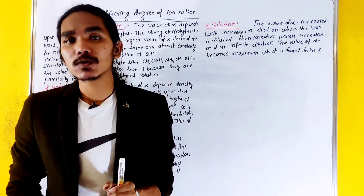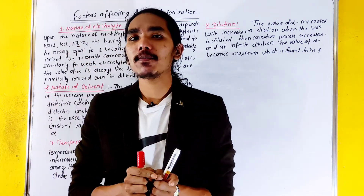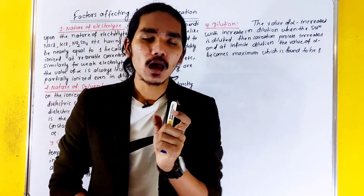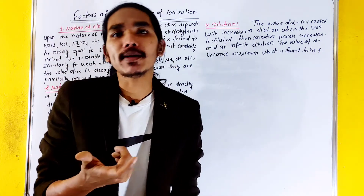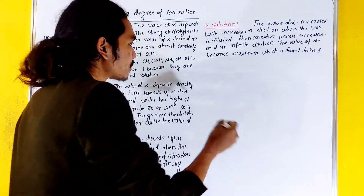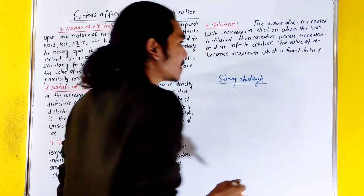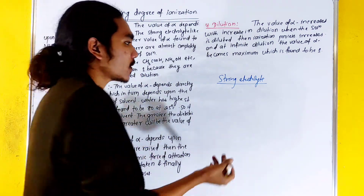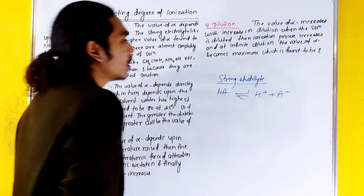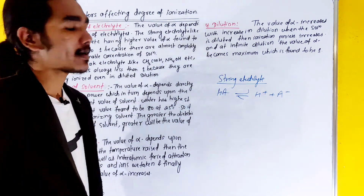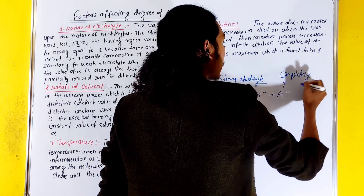In the last couple of videos, we learned about Ostwald's dilution law. We learned about the concept of ionization — what is the basic concept of ionization, and what is a strong electrolyte. This is the same concept of ionization. We learned about the strong electrolyte: it is completely ionized.